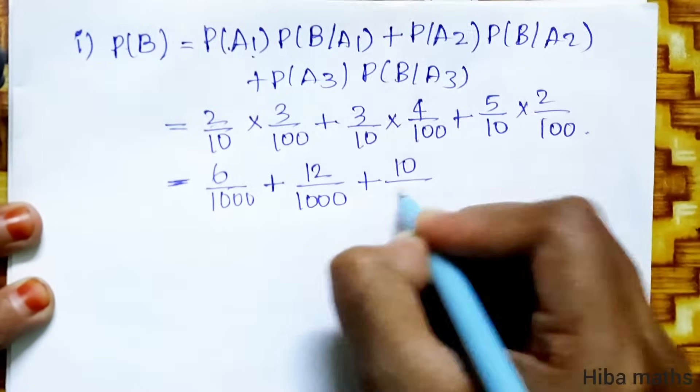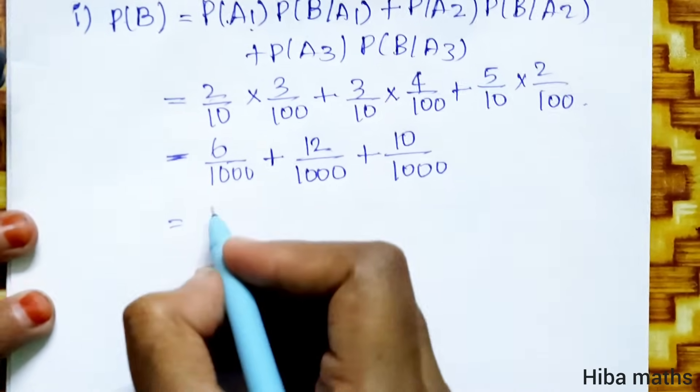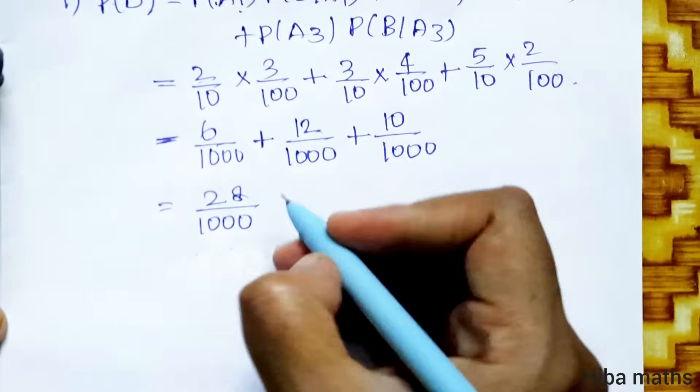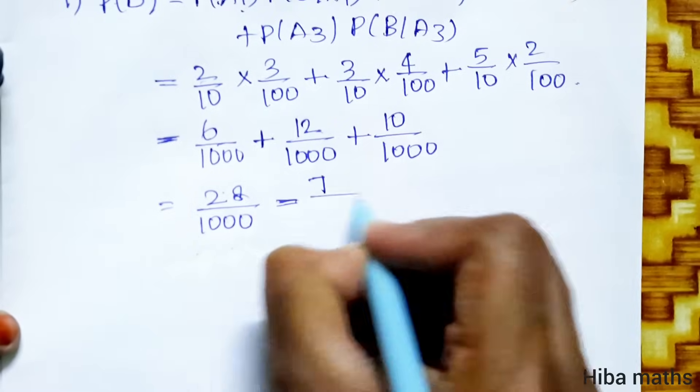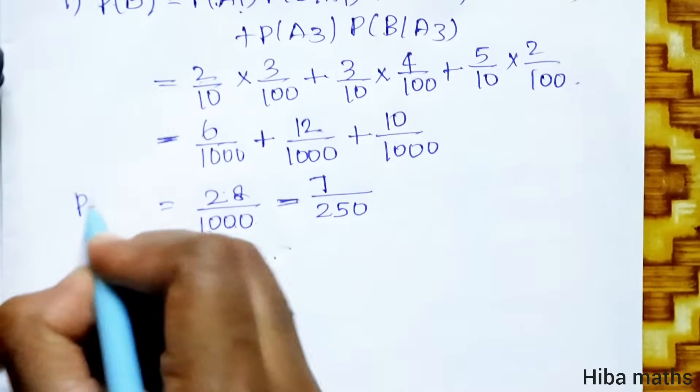Plus 10 by 1000. So 28, 18 plus 10 is 28 by 1000. This all, 4 table, 4 times 7 is 28, 4 times 25 is 100, and the 0 update and the 0 update. The P of B value.